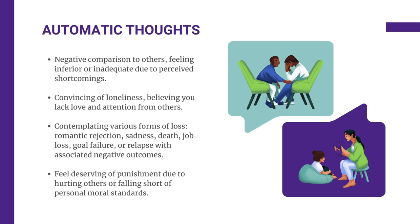The fourth automatic thought scenario is when a client believes they deserve punishment due to feelings of guilt. This guilt arises from either causing harm to someone or falling short of their own moral principles, possibly indicating a discrepancy in values and actions. The emotion associated with this situation is guilt, and it's crucial to distinguish between guilt and shame. Guilt entails acknowledging that you've done wrong, while shame revolves around the belief that you are inherently wrong or damaged. It becomes essential to discern between these emotions, as individuals experiencing shame often perceive themselves as broken. Understanding this distinction is vital in addressing automatic thinking patterns and determining appropriate coping strategies, methods to dispute the thought, and behavior modification strategies.